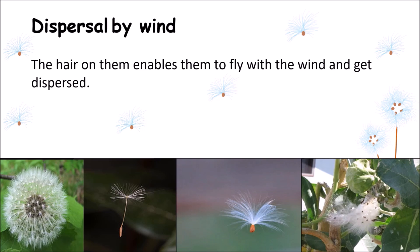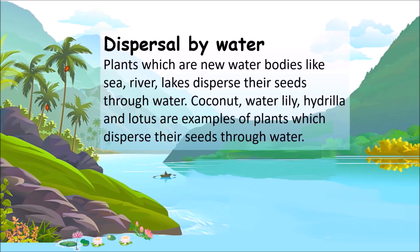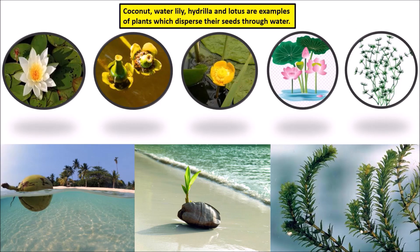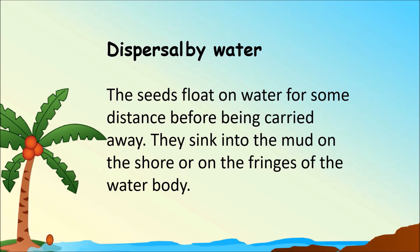Another method is dispersal by water. Plants which are near water bodies like sea, river, and lakes disperse their seeds through water. Coconut, Water lily, Hydrilla and Lotus are examples of plants which disperse their seeds through water. The seeds float on water for some distance before being carried away, and then sink into mud on the shore or on the fringes of the water body.